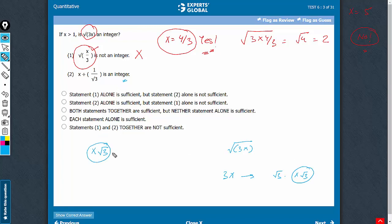This is what statement 2 says, that x√3 is an integer. We know that x is not equal to 0 because x is greater than 1. And therefore, if this part is an integer, see, an integer times √3 is never an integer. So we know that 3x is not an integer.